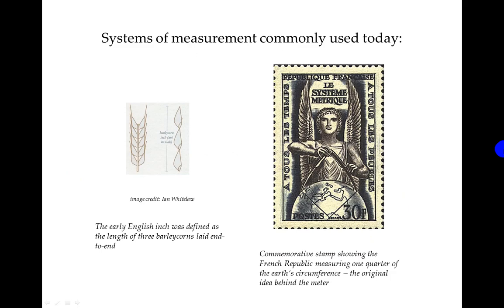Systems of measurement commonly used today. The early English inch was defined as the length of three barley coins laid end to end. Here is a stamp commemorating the French Republic measuring one quarter of the Earth's circumference, which was the original idea behind the meter.